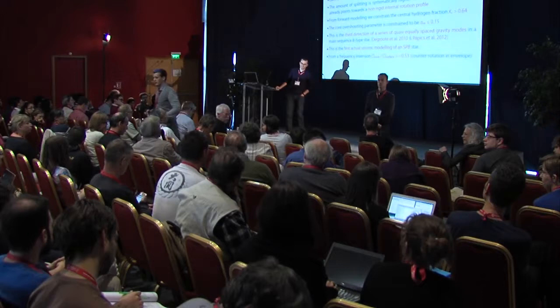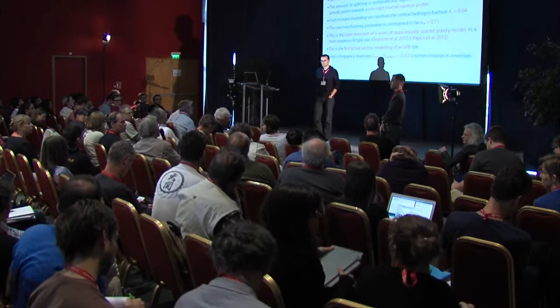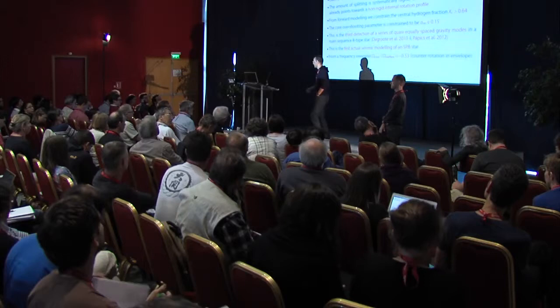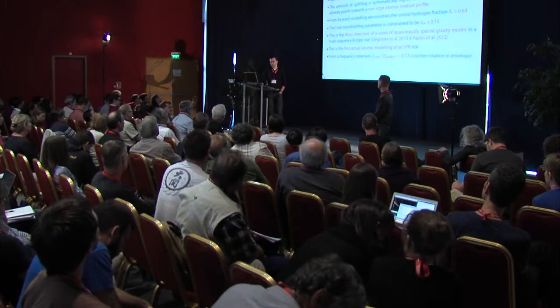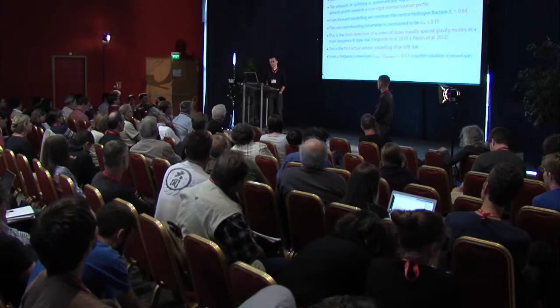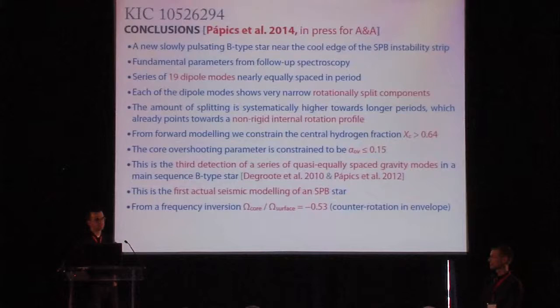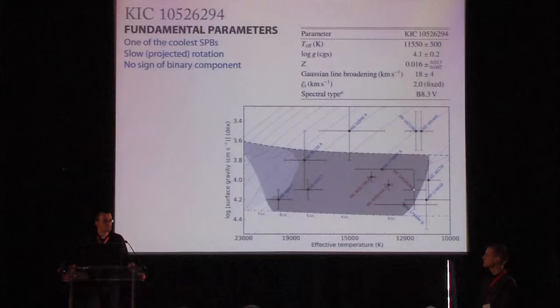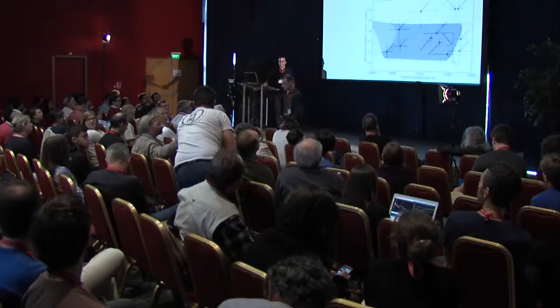Audience question: This star is in the same position in the HR diagram as mercury-manganese stars, and it is a slow rotator. Do you have any idea about abundances of metals inside? Reply: The problem is that the spectrum I showed is all the spectroscopy we have on this star. It's 13th magnitude, so it needed almost a half-hour exposure to get one spectrum with a signal-to-noise of 70 on the William Herschel Telescope. With ISIS we only have two wavelength ranges, so it's very difficult to get abundances. My table does have a metallicity value but with uncertainties of plus/minus 0.013 to 0.007, and for a 13th magnitude star it is very difficult.